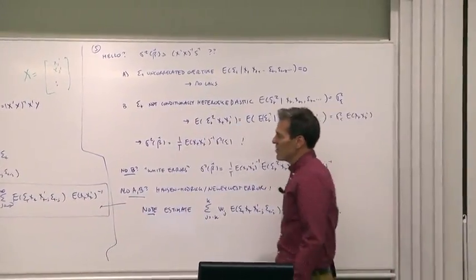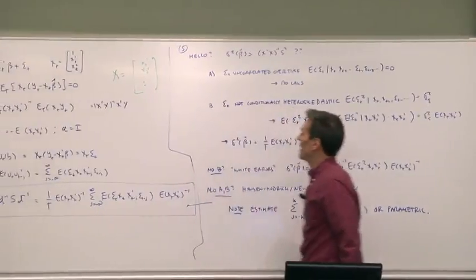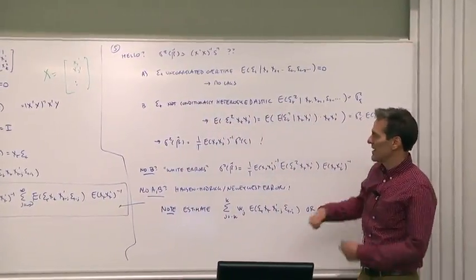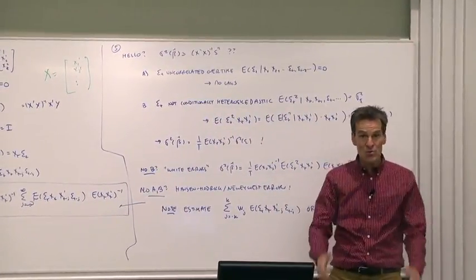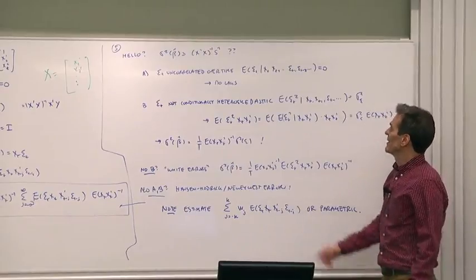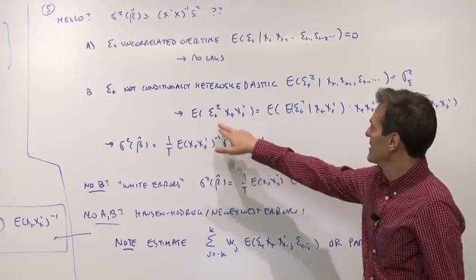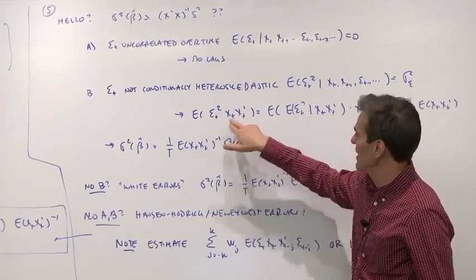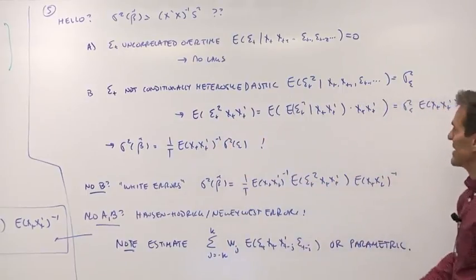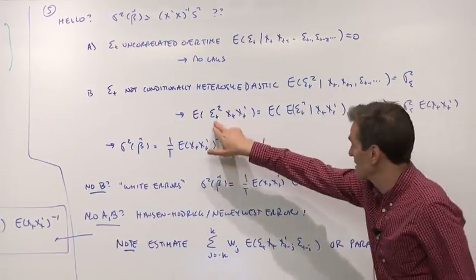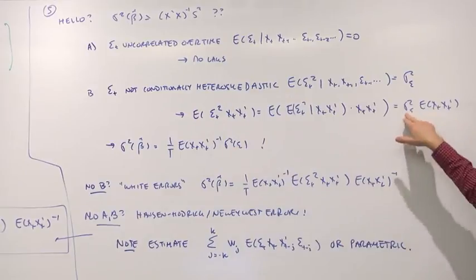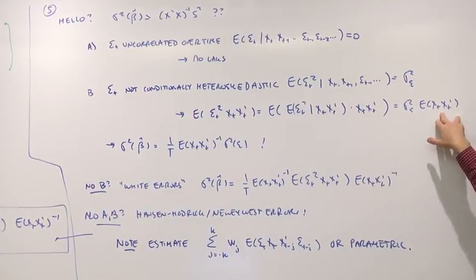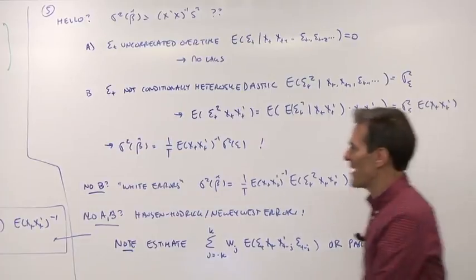Secondly, suppose that the errors are homoscedastic. They have constant variance. That's the other usual OLS assumption. If the errors are homoscedastic, then the remaining term, E of epsilon x, x prime, is the same thing as E of epsilon squared times x, x prime, sigma squared epsilon, E of x, x prime.